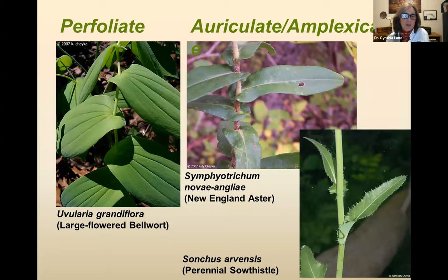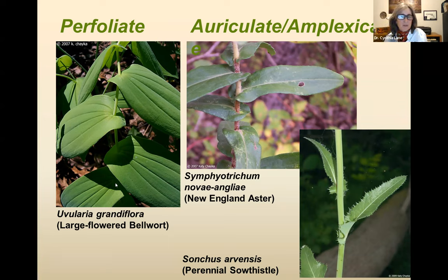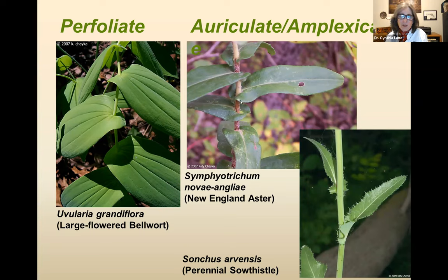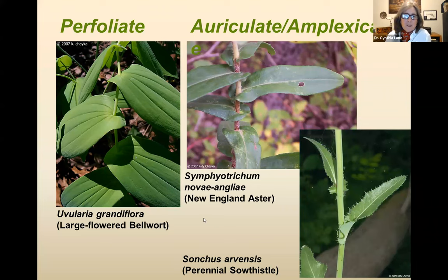Large-flowered bellwort, a common understory plant in spring, is what's called perfoliate — the leaf goes all the way around the stem, so the stem perforates the leaf. That plant is easy to tell once you know that character. A couple other ways leaves can attach are auriculate and amplexicaul — that refers to either little lobes of the leaf that kind of wrap around the stem. In the case of New England aster, the lobes wrap around and just about touch. Perfoliate means the leaf wraps all the way around; auriculate means the leaf just has little ears on it.